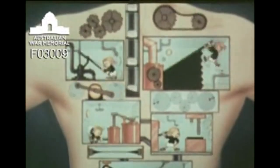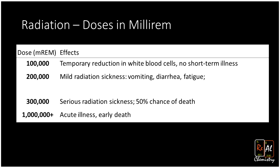The key to deciding if you live or die is the dose. Here you can see the dose of different radiation exposures in a unit called millirem. Basically, the higher the millirem, the more particles and the higher energy particles you are seeing. At 200,000 millirem, you can start to experience the symptoms of radiation sickness. At 300,000 millirem, you have about a 50% chance of dying.